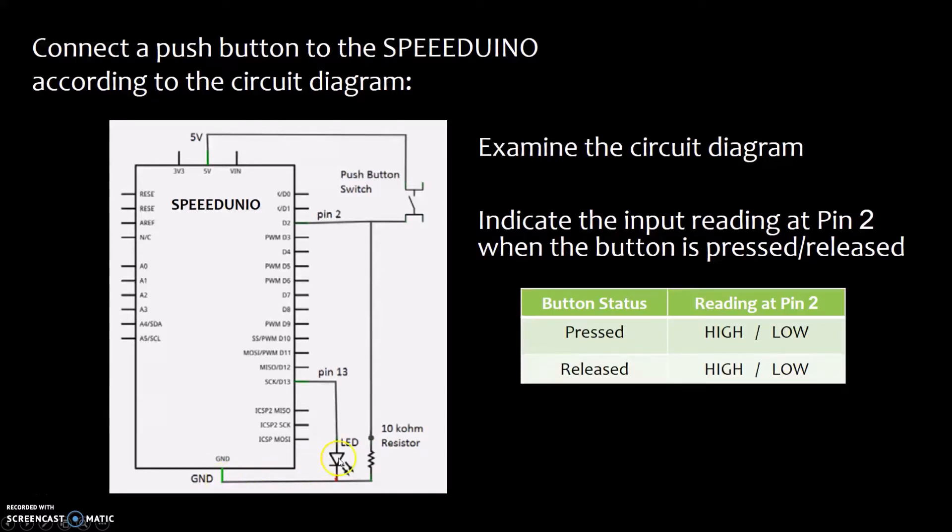Examine the circuit diagram carefully. You should see that when the push button is pressed, pin 2 will read 5 volts or high input. And when the push button is released, pin 2 will read a low input.